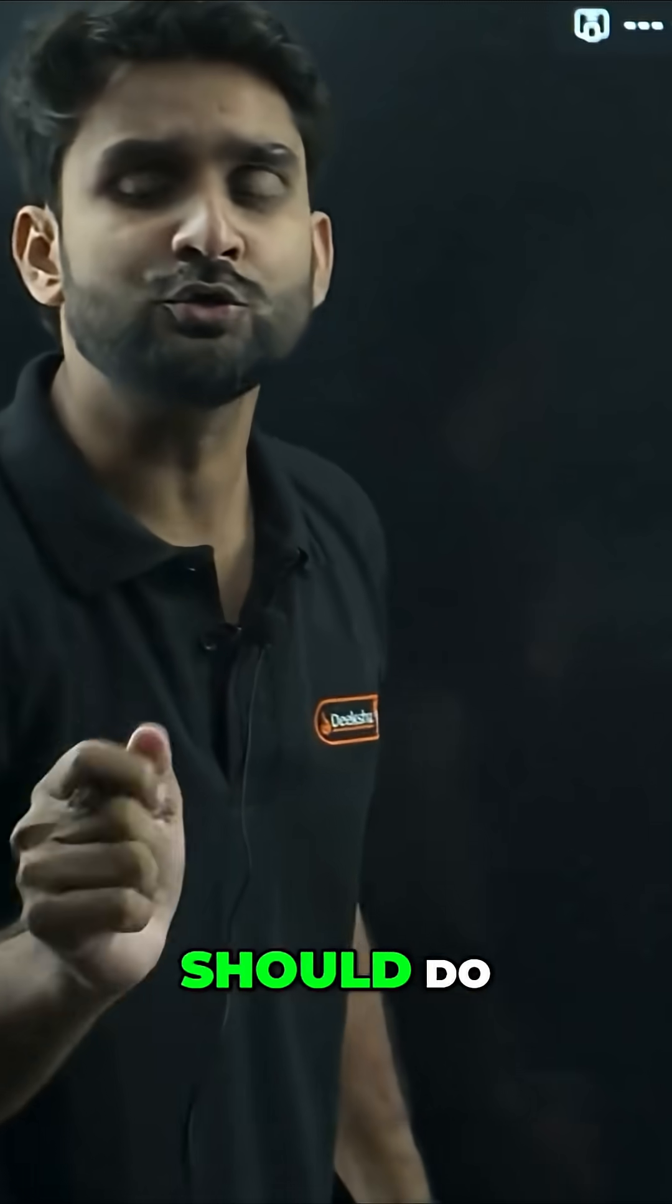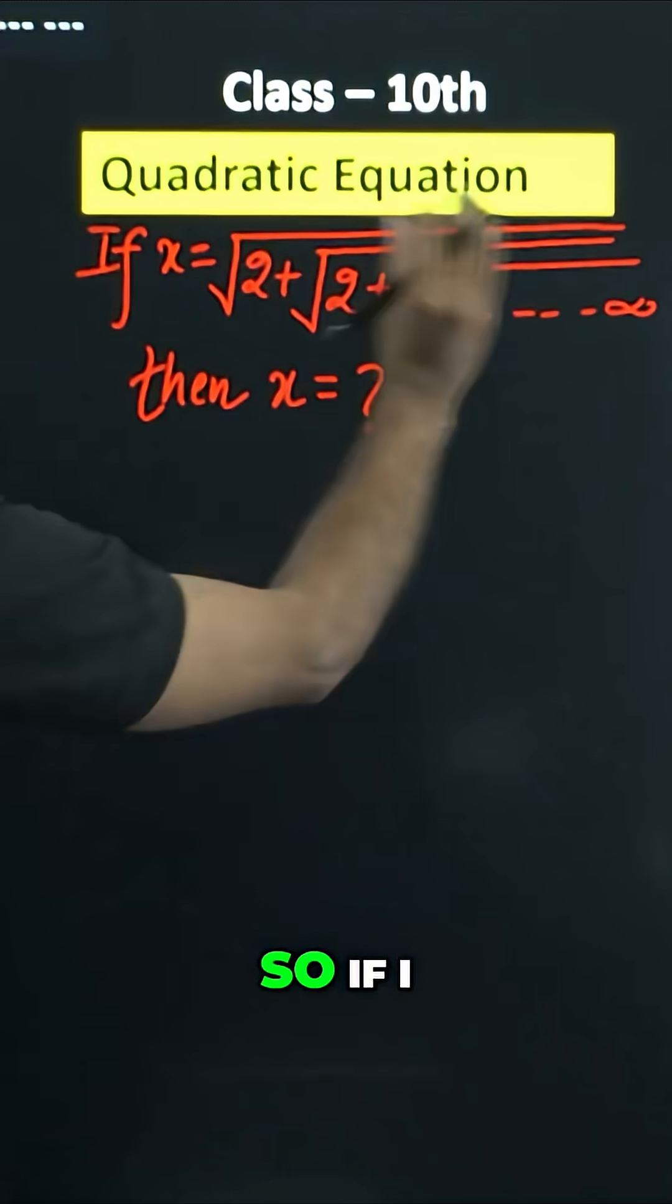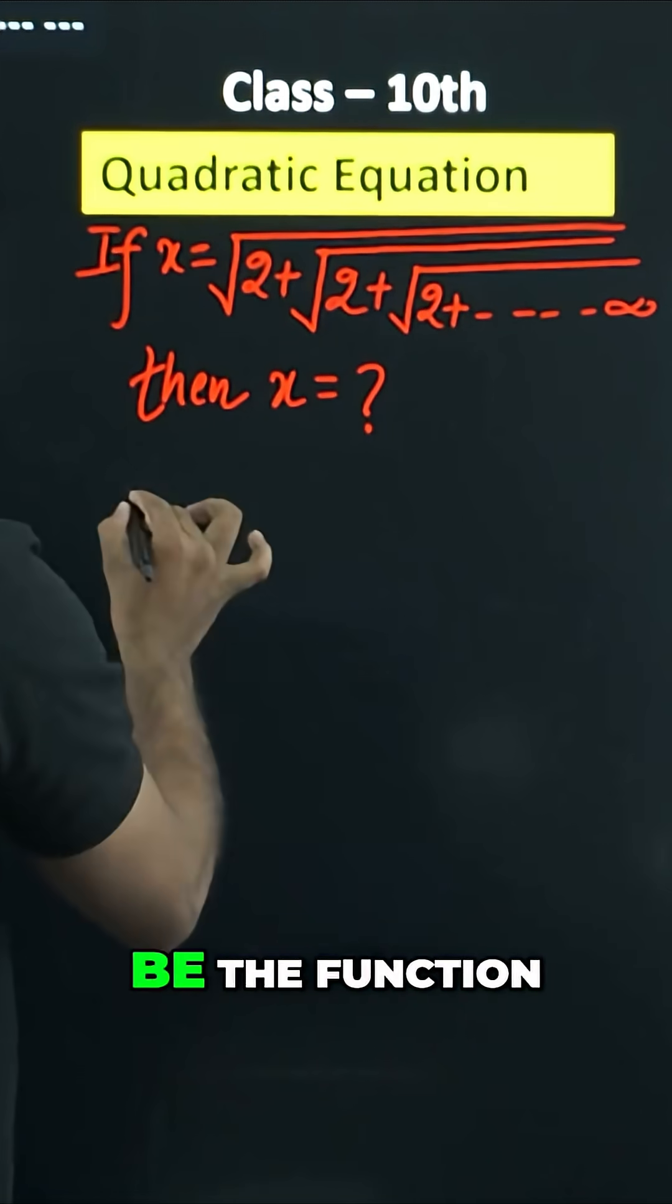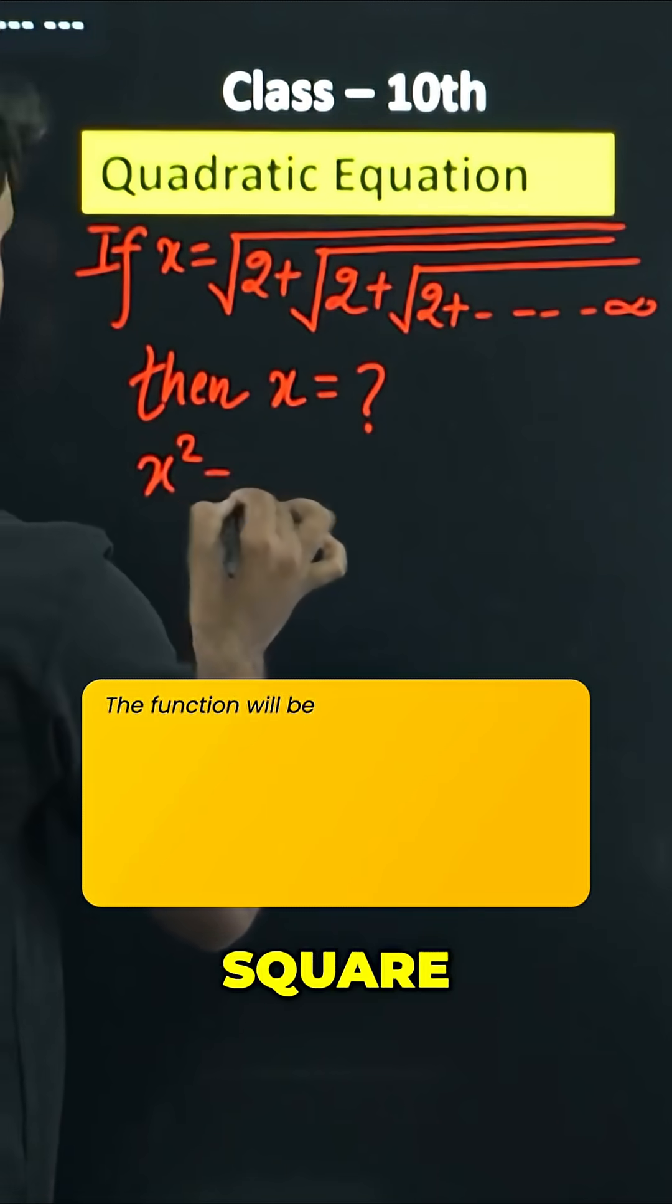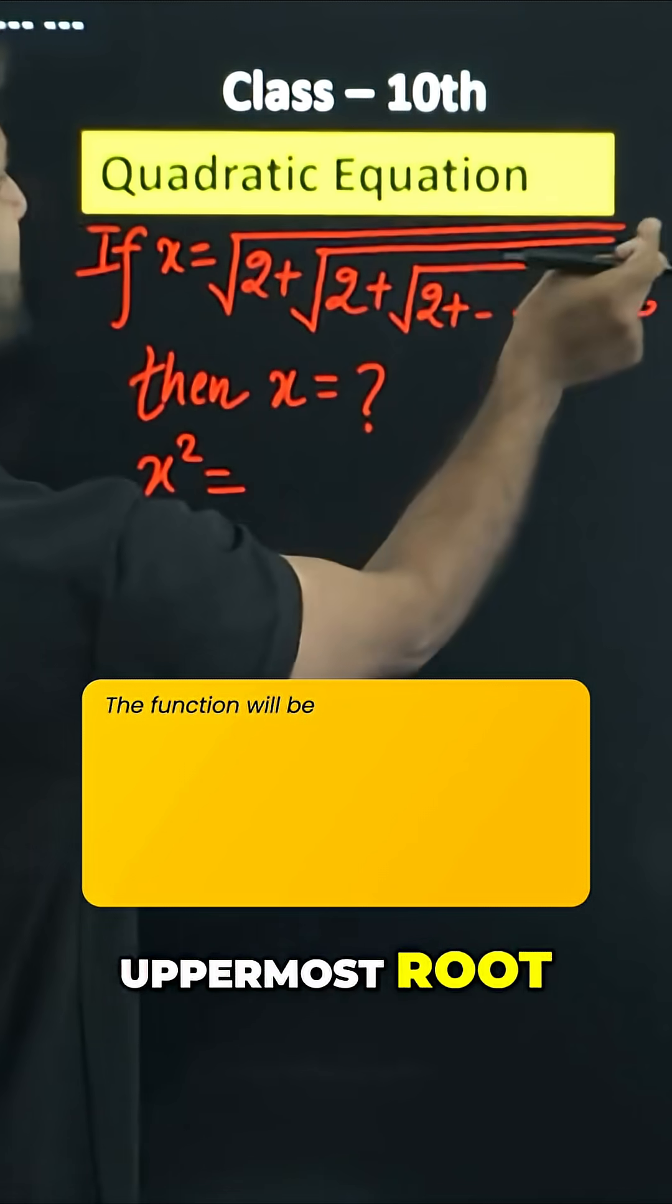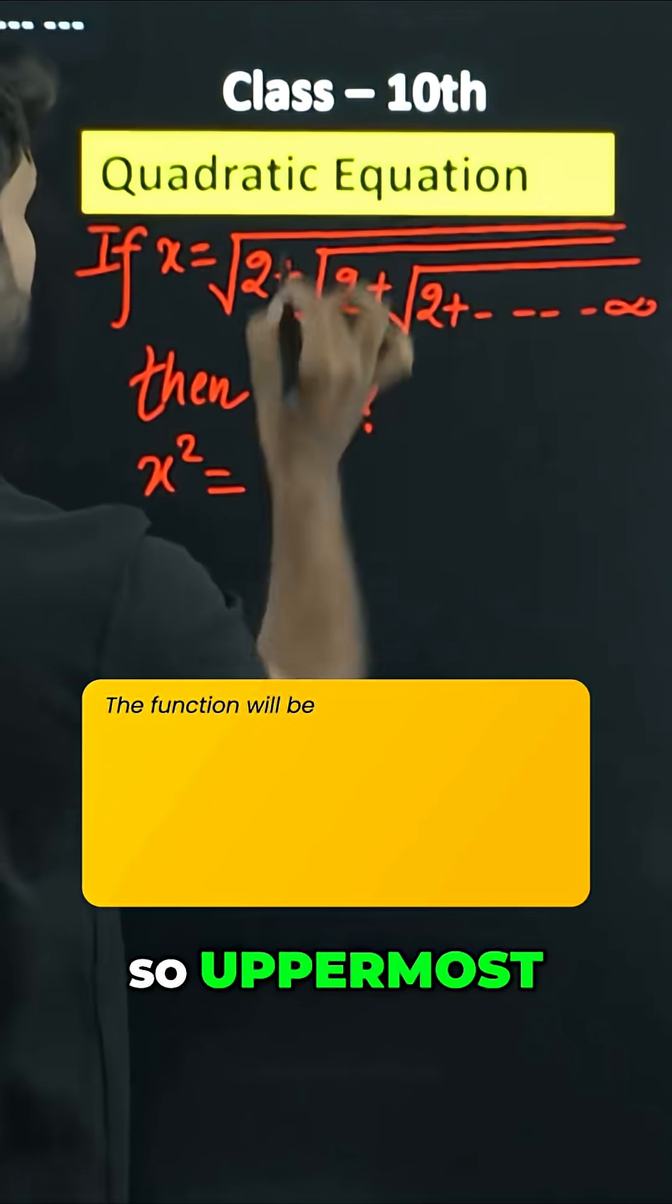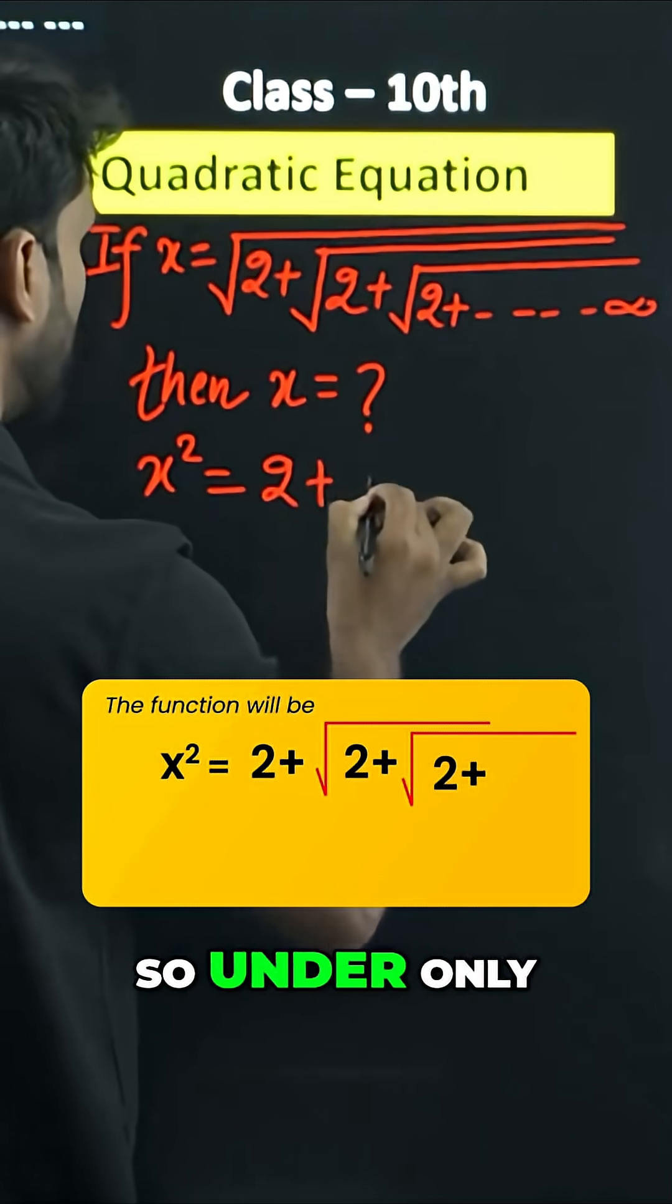In such questions, what you have to do is square both sides. If I square both sides, the function will be like x square. Squaring the right side, the square of the uppermost root will be eliminated, so the uppermost root will be removed and only root 2 will be there.